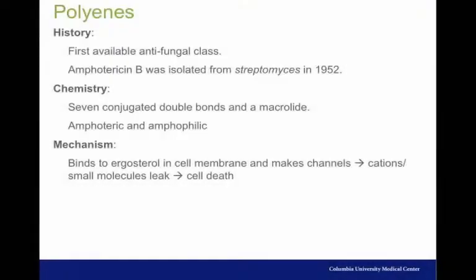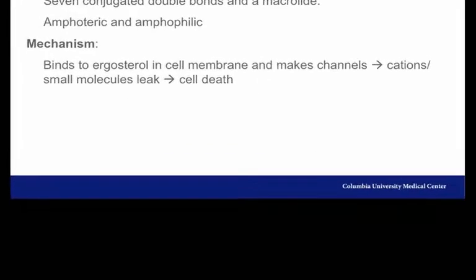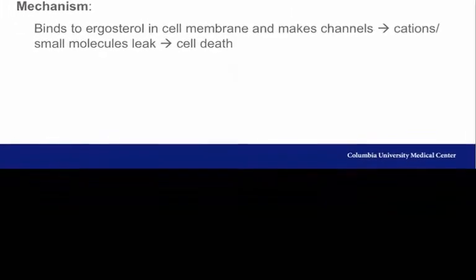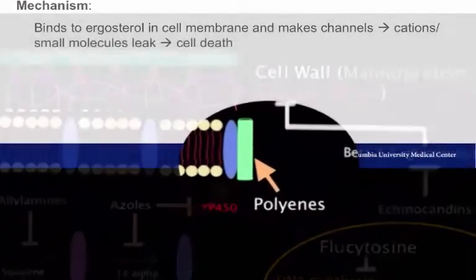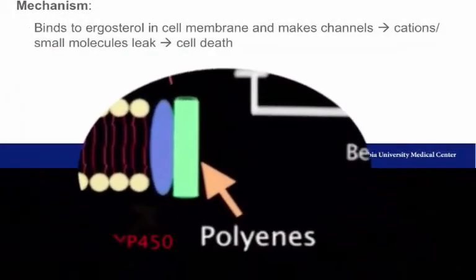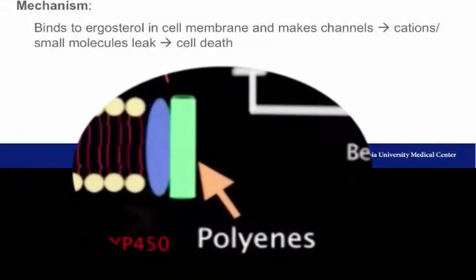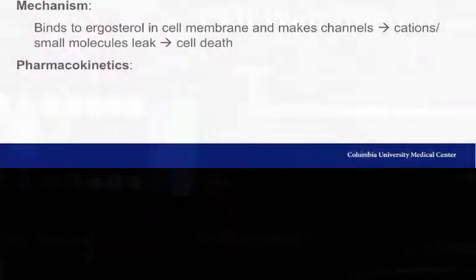Amphotericin B's antifungal activity depends on its binding to ergosterol in the cell membrane, forming cylindrical pores or channels that allow cations and other small molecules to leak out of the cell. This depolarizes the cell membrane, resulting in cell death.